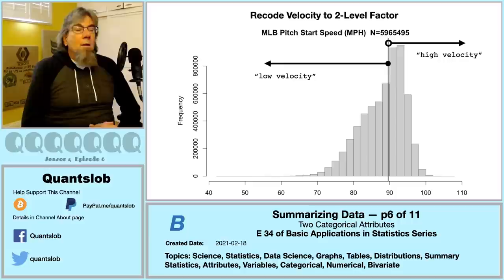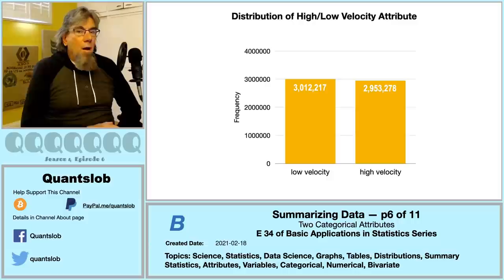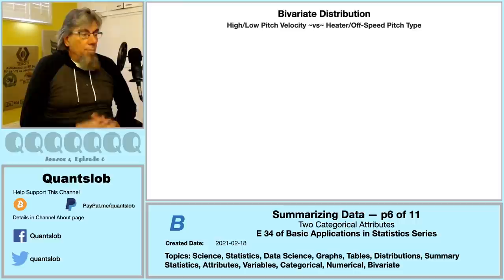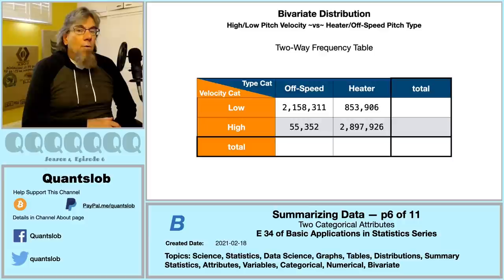Looking at the distribution of the high/low velocity attribute in a bar chart, the two categories are almost equally popular — and this should not be a surprise, since the median splits our collection in half. Now for the big payoff: a two-way frequency table, also known as a contingency table. This shows the bivariate distribution of our high/low velocity categorical attribute and our heater/off-speed pitch type categorical attribute.